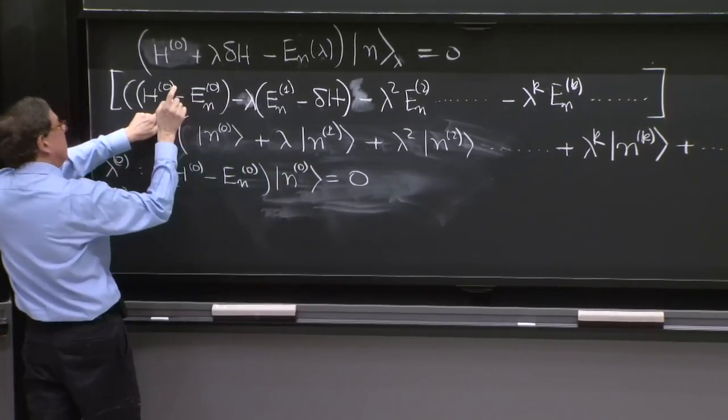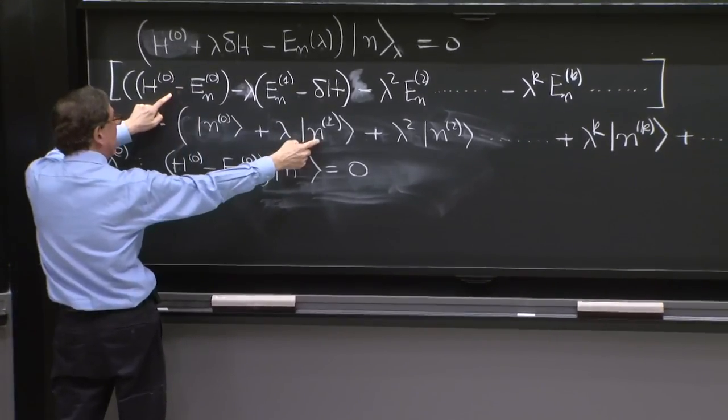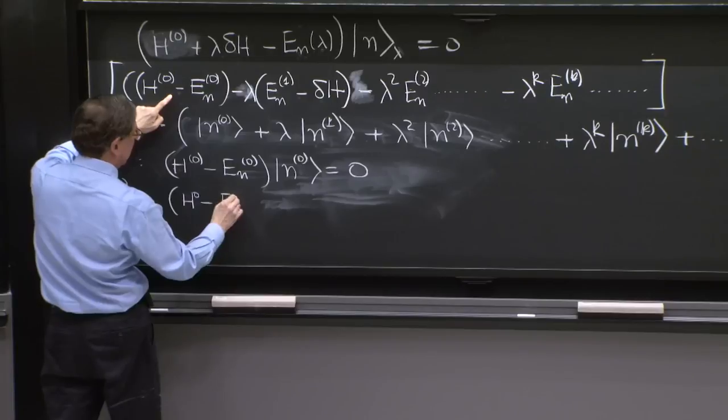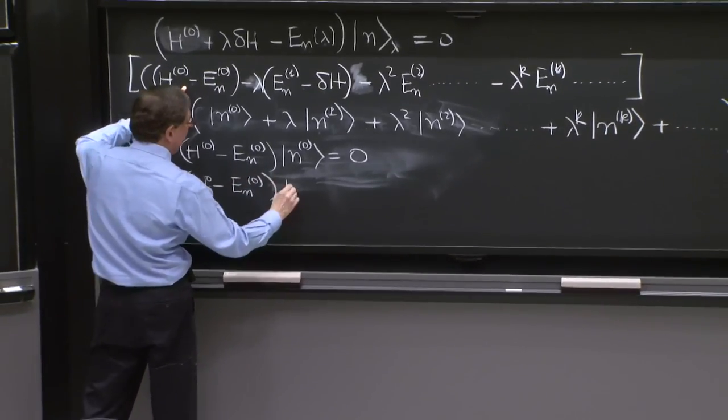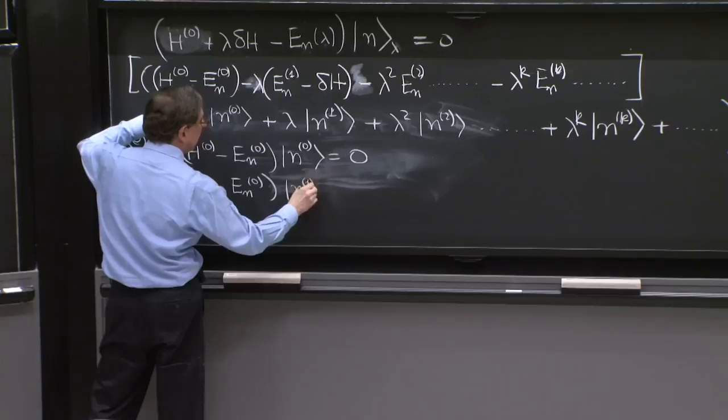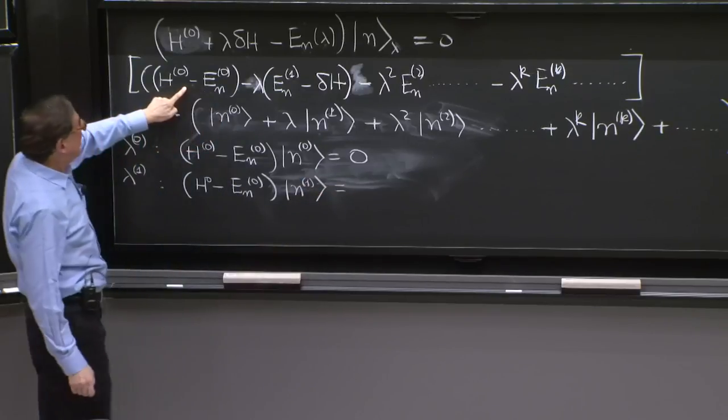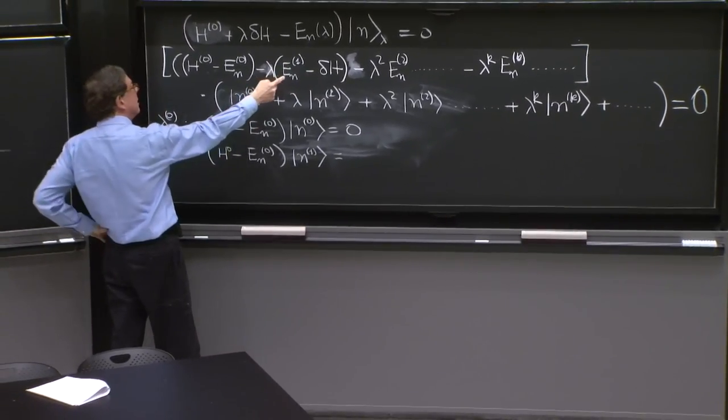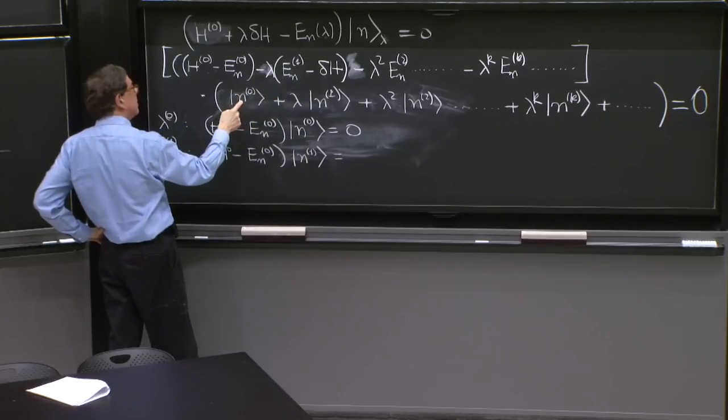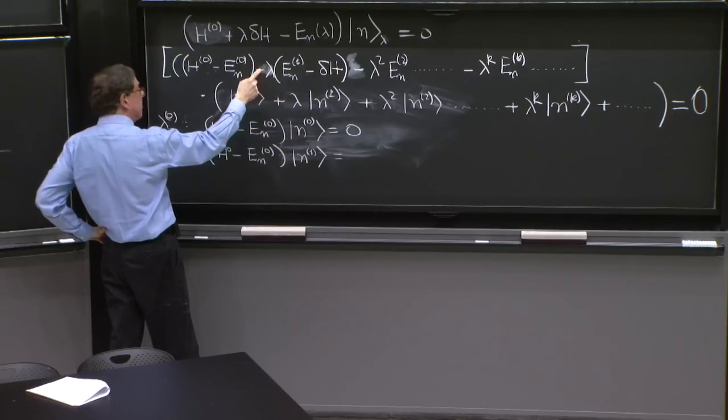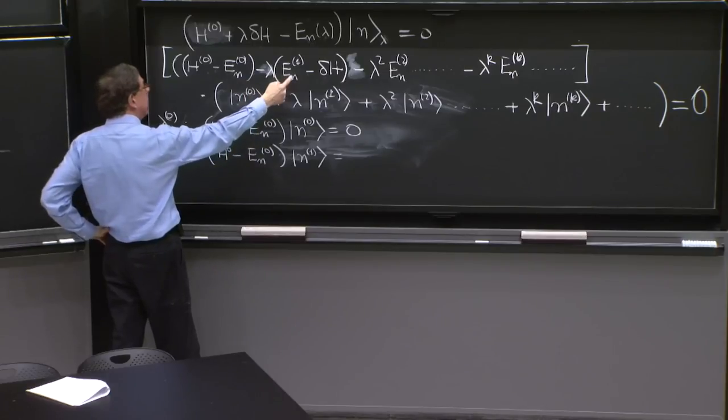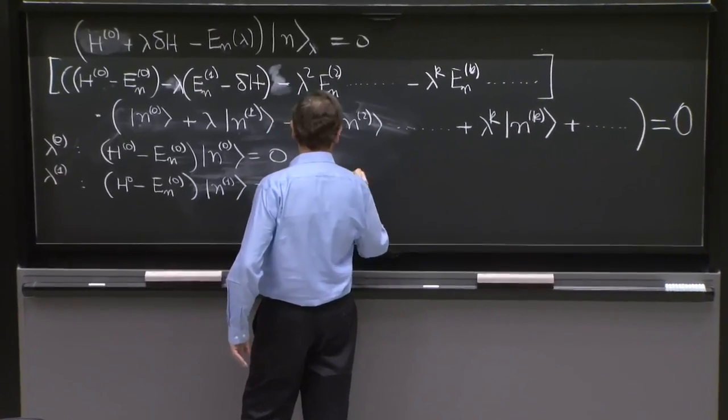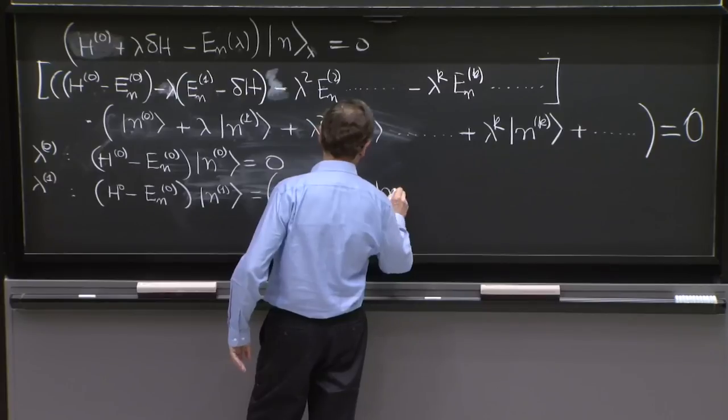Lambda can get from this term in the Hamiltonian acting on n1. That's order lambda. So let's write it here. H0 minus En0 on n1. And the other term comes from a lambda in the first factor and no lambda in the second. So it's this term, this acting on that state. Look, there's a lambda and there's a minus sign. So I can put it on the right hand side. And we get En1 minus delta H acting on n0.